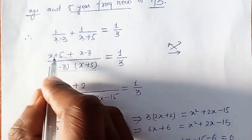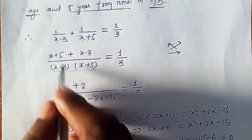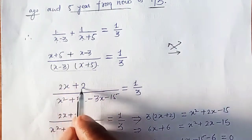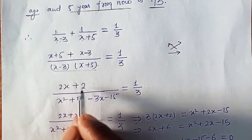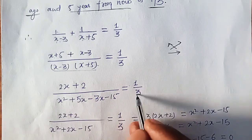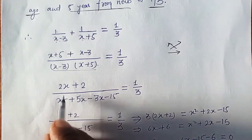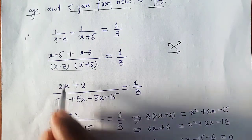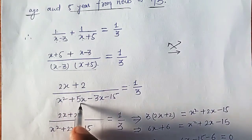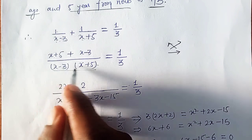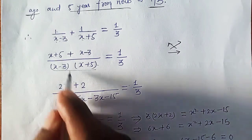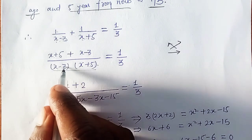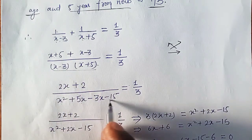Expanding the numerator: x plus x gives 2x, and 5 minus 3 gives 2, so numerator is 2x plus 2. Expanding the denominator: x squared plus 5x minus 3x minus 15, giving x squared plus 2x minus 15.